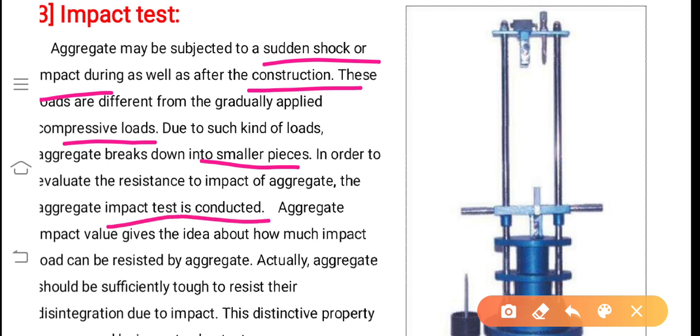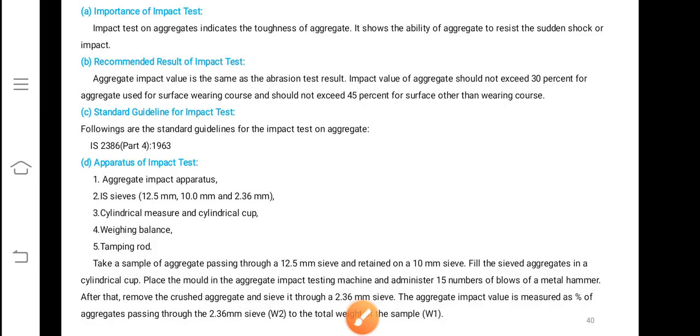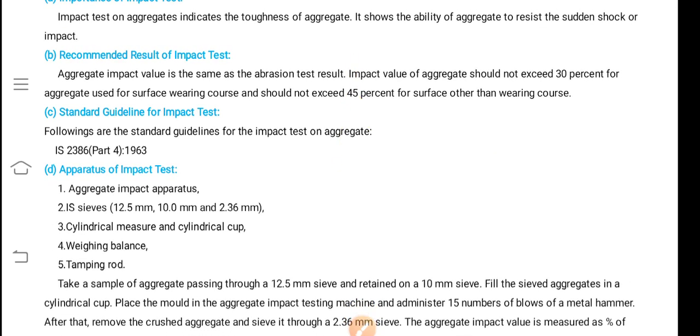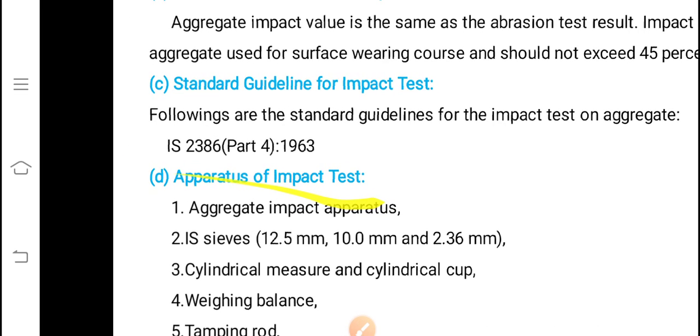In order to evaluate impact of aggregate, test to be performed. Aggregate impact value gives the idea about how much impact load can be resisted by aggregate. Actually aggregate should be sufficiently tough to resist their disintegration due to impact. The distinctive property can be assessed, that is nothing but toughness property due to impact.